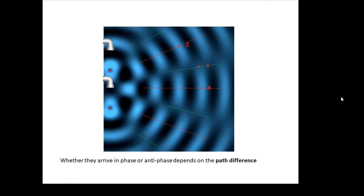Whether waves arrive in phase or antiphase depends on something called the path difference — the difference in how far they have traveled. If you look at point X, the waves that arrive anywhere on that line have traveled the same distance. If they started off in phase and traveled the same distance in the same time, they arrive in phase, giving constructive interference along that line.